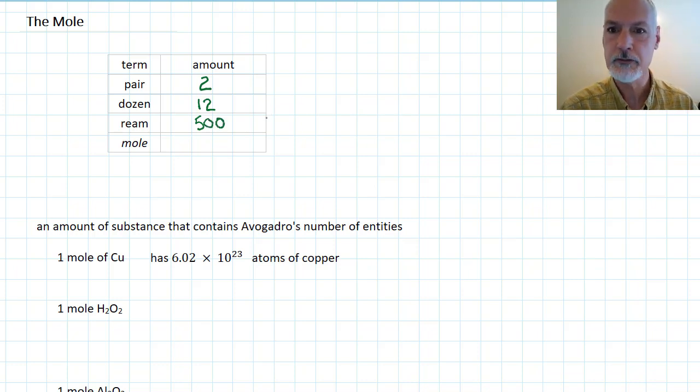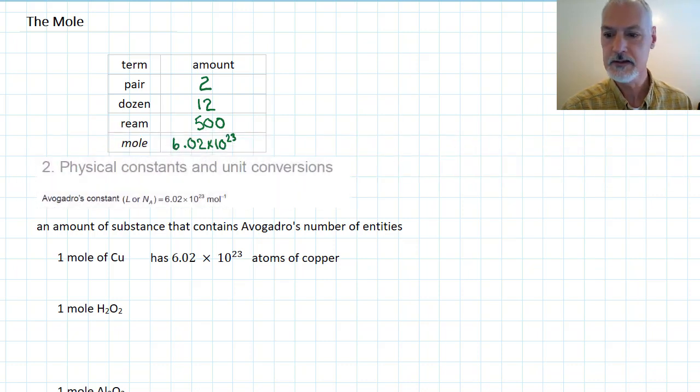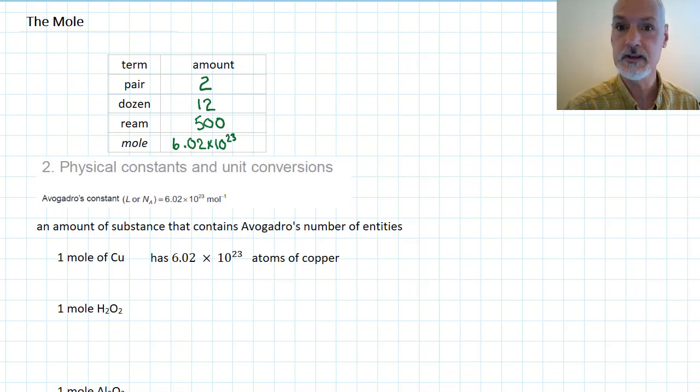Now a mole to a chemist also represents a certain amount, and that amount is 6.02 times 10 to the 23rd particles. This number is not one you'll need to commit to memory, but you'll use it quite often. It's available in your IB data booklet, and it's called Avogadro's Constant, given the symbol L or Na.